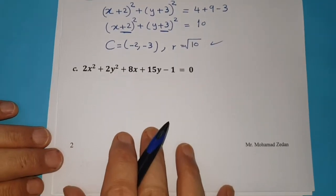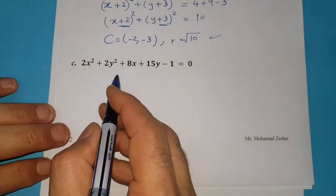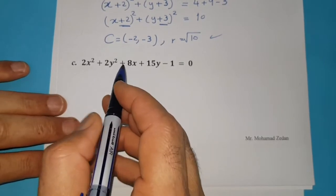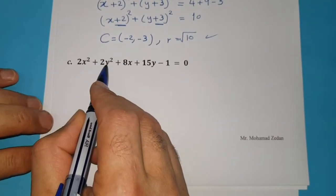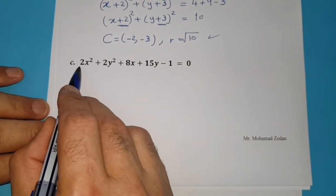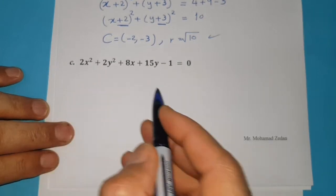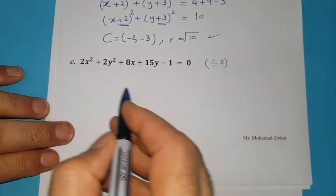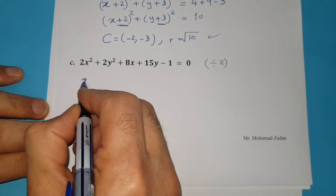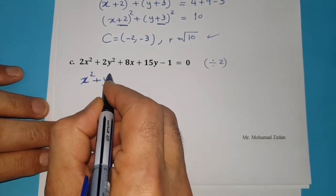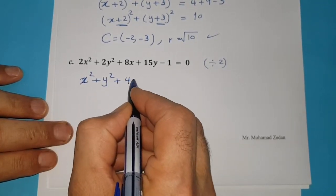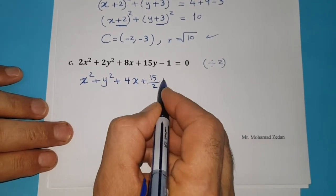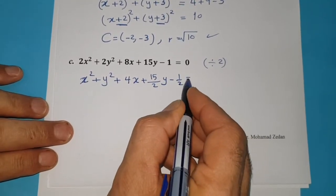Continuing with number C. This equation is also a general form of the equation of a circle, but the coefficient of x squared or y squared is 2. Take the whole equation and divide by 2. You get: x squared plus y squared plus 4x plus (15 over 2)y minus one half equals 0.